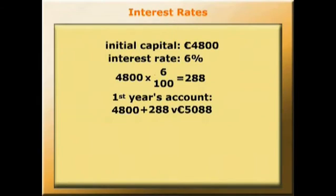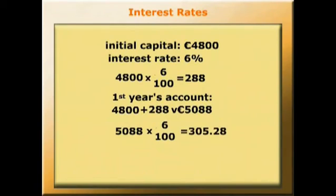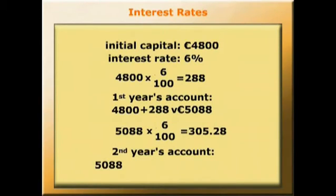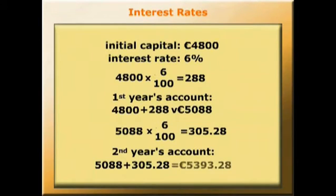Next year, the student gets interest of 6% on all 5,088 euros. So 5,088 times 6 over 100 gives 305.28 euros of interest. So the account will now have the 5,088 euros that we started the year with, plus the interest of 305.28, which gives 5,393.28 euros.